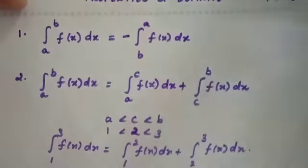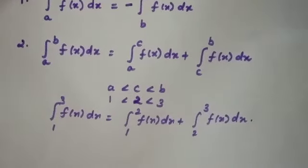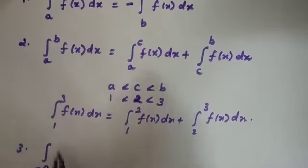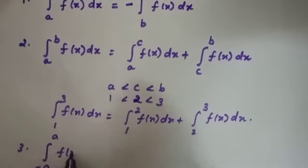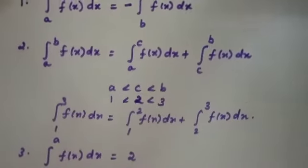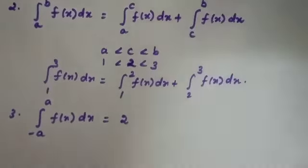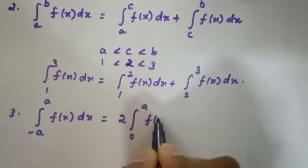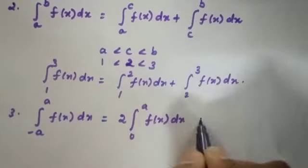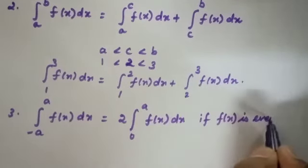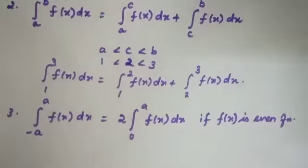The third property is: the integral over minus a to plus a of f(x) dx is equal to 2 times the integral over 0 to a of f(x) dx, if the function is an even function. We first check whether the function is an even function.